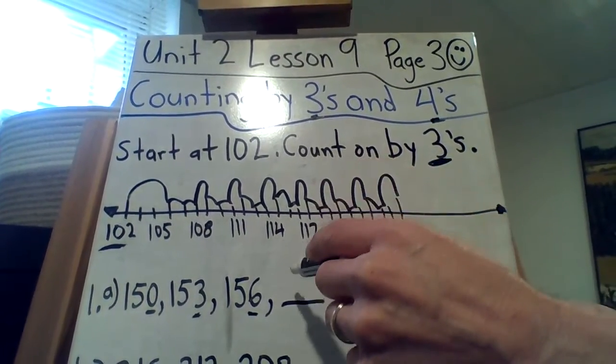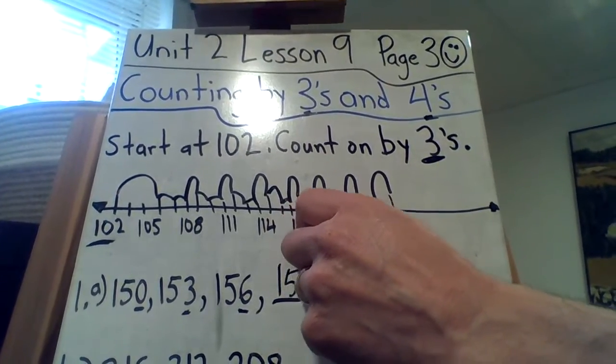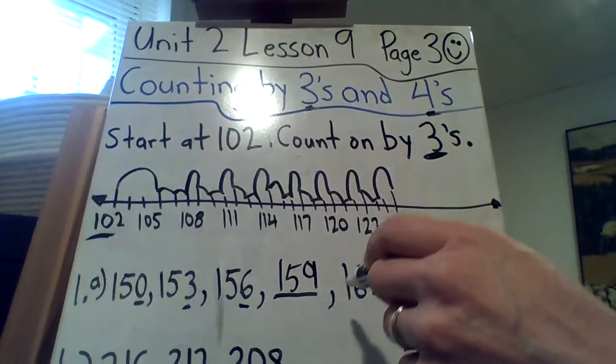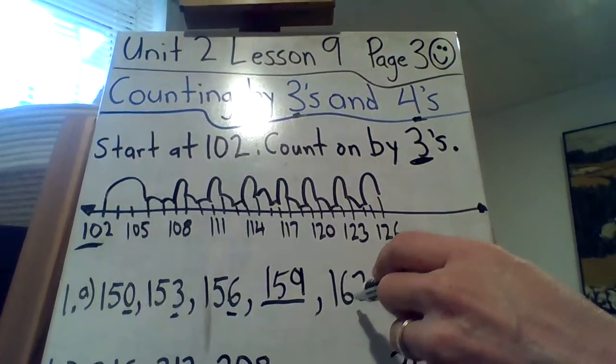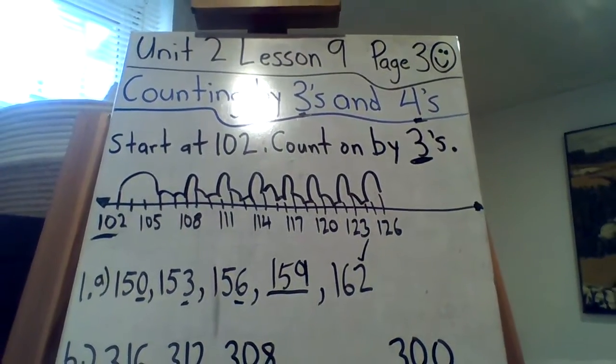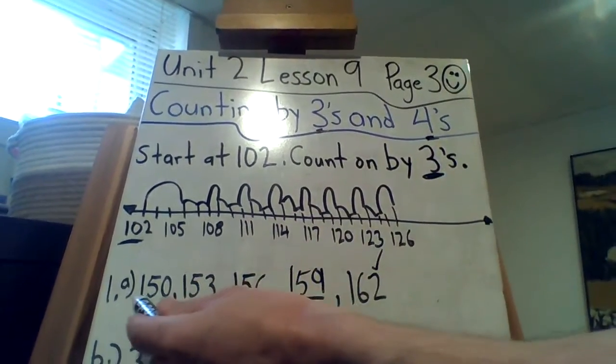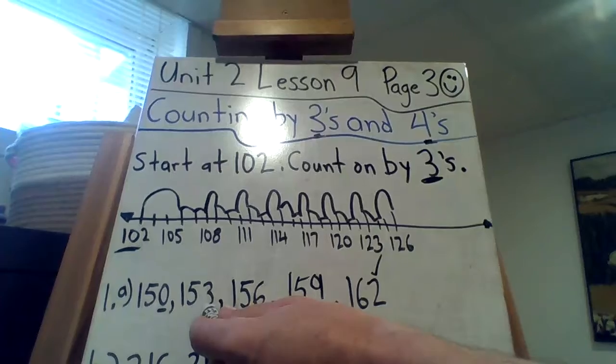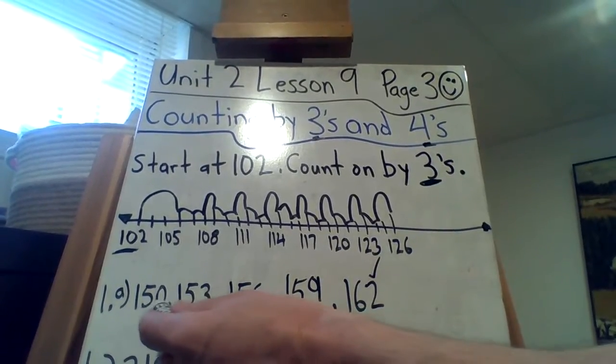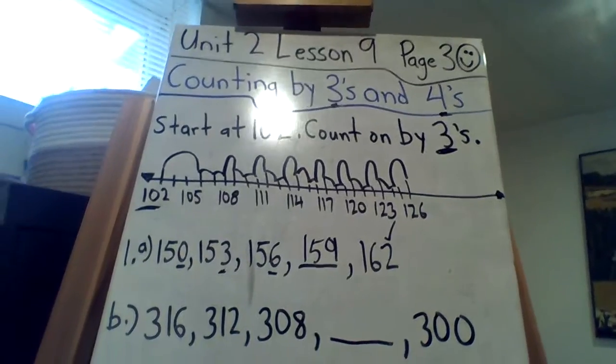So, 156, 157, 158, 159, 160, 161, 162. Works. Okay? So, you have to know. First, you look at your numbers. Are they going up, adding on? Are they going down, subtracting? And then, are they going by 3's or 4's? That's all you're looking for.